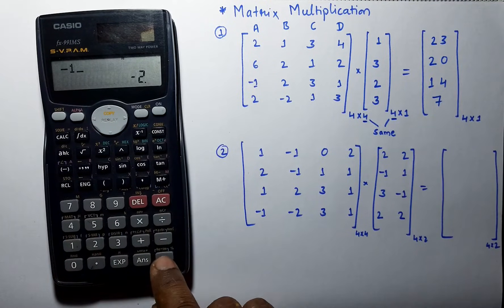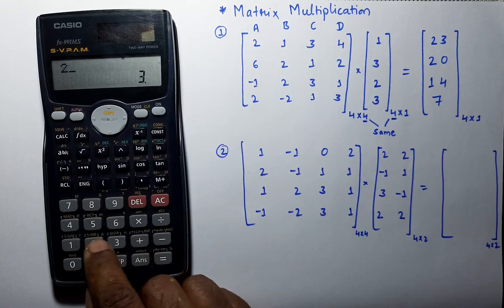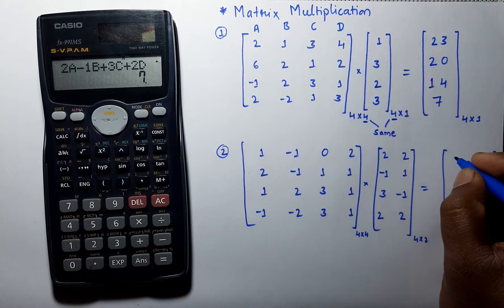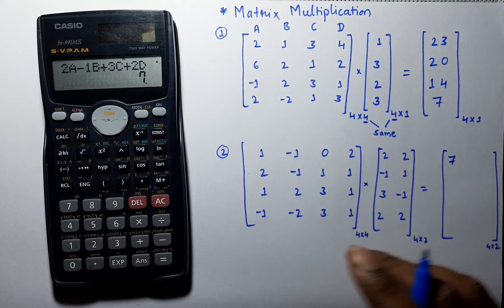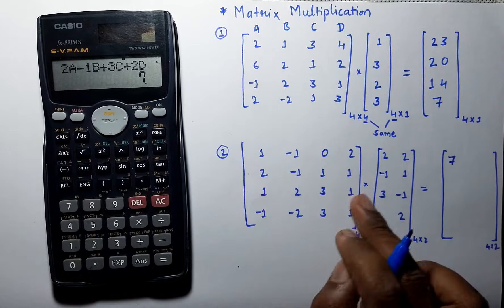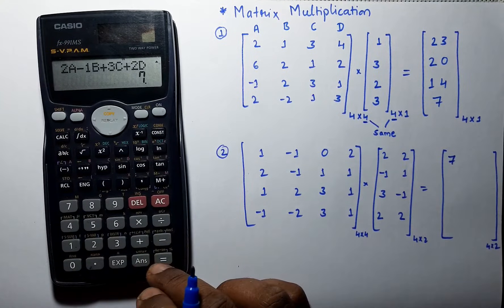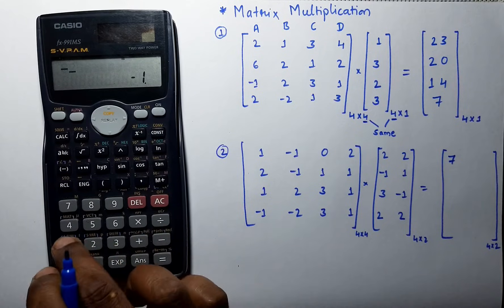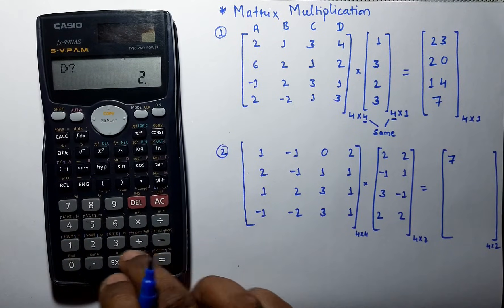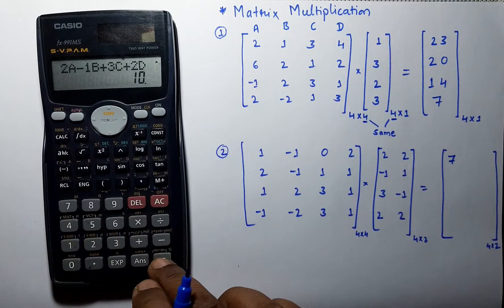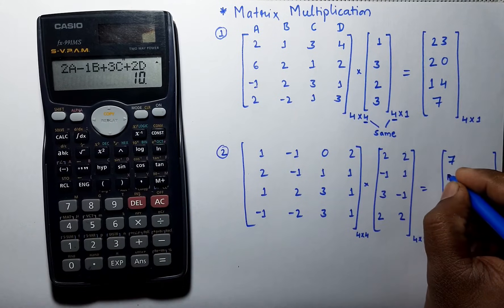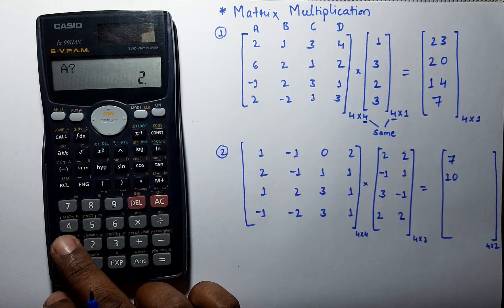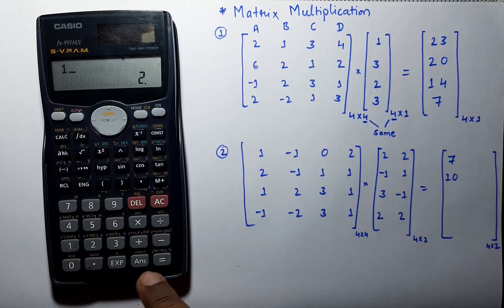Enter the values of a, b, c, d and we will get the answer. Write it down in the first column. To find the next value, press calculate and enter the values: 2, minus 1, 1, and 1 — and the answer is 10.